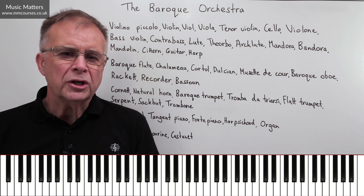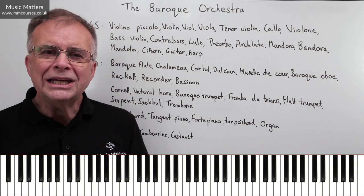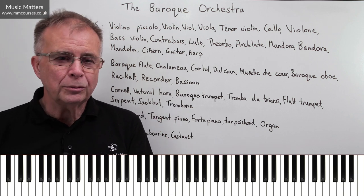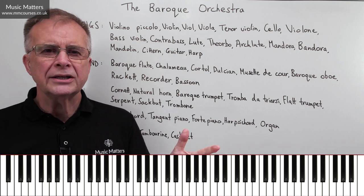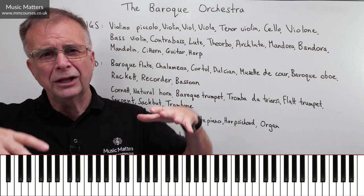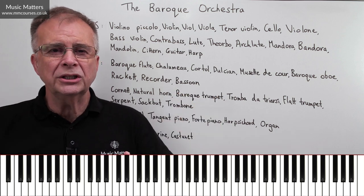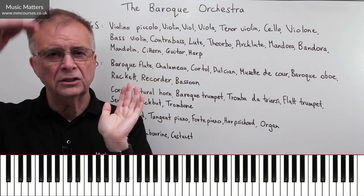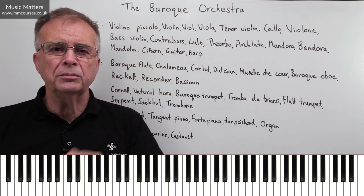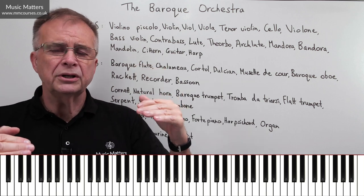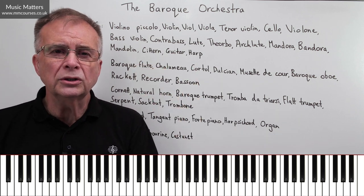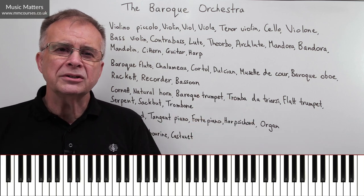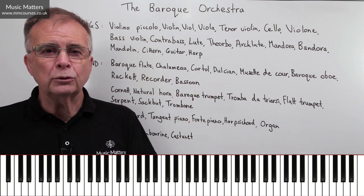Because the orchestra as we know it today didn't really become a standardised thing until the classical period. When we got to the classical period, we settled on this idea of: you've basically got a string section, then you've got your flutes, oboes, clarinets, and bassoons in the wind section — maybe one or two players — and then your brass section with trumpets and horns, and then percussion, basically the timpani. That became a standardised orchestra in the classical period.